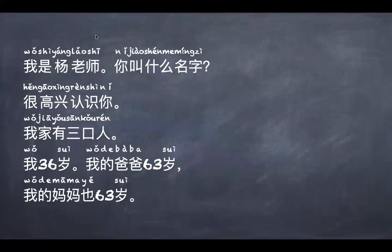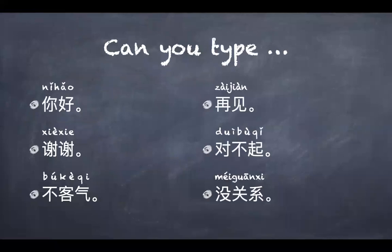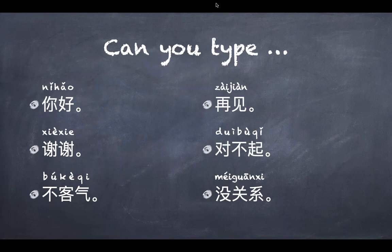Now I'd like you to have this as your homework. Can you type all these pleasantries that we have learned in the past? 你好, 再见, 谢谢 — Thank you. 不客气 — Don't mention it. 对不起 — Sorry. 没关系 — No problem. Give it a go, give it a try — you're going to enjoy it! So that's all for this review and homework. Goodbye.